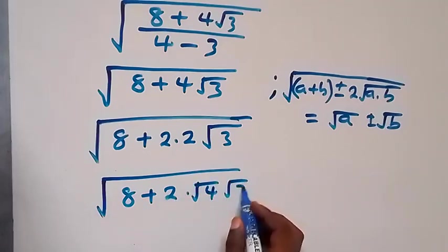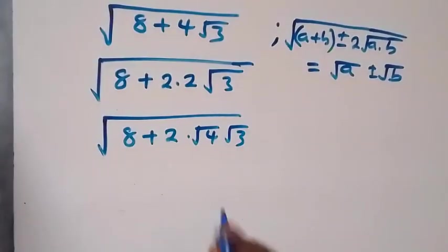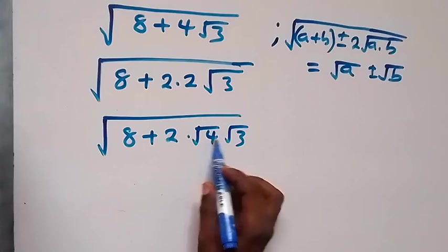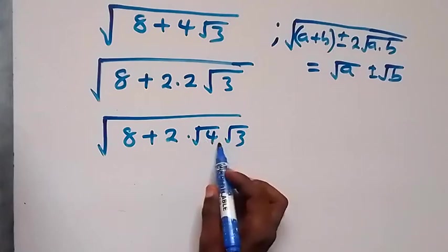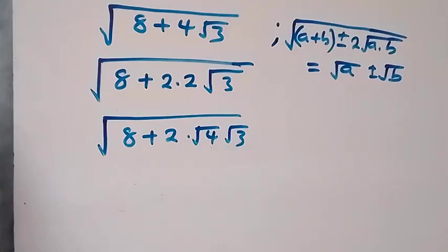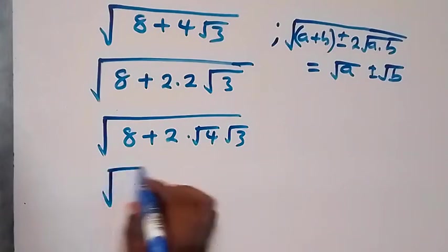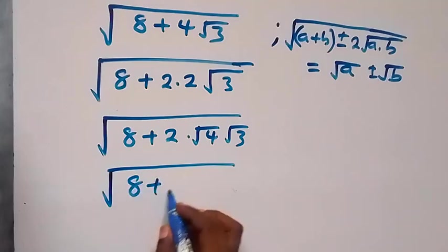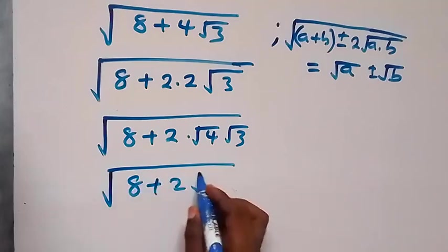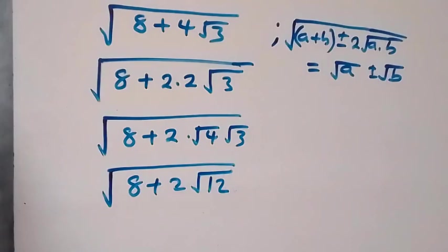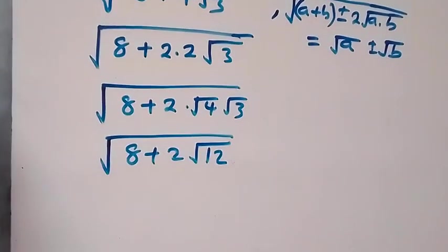Then times root 3. Then we have, we can multiply this number inside the same root, which is 12. So we have root 8 plus 2 times root 12. Now then from here we can separate this.